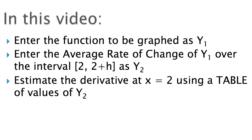In this video we're going to learn how to compute the average rate of change of a function in the graphing calculator over an interval. In this example, the interval will be from 2 to 2 plus h. We'll start by entering the function as y1, then enter the average rate of change of y1 over that interval as y2. Then we'll estimate the derivative at x equals 2 using a table of values — computing the limit of the average rate of change to estimate the derivative.